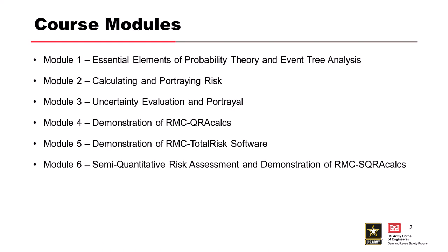This course is going to consist of six different modules, all of which will take place online. Module 1 will cover the essential elements of probability theory and event tree analysis. Module 2 will cover calculating and portraying risks. Module 3 will step into uncertainty evaluation and portrayal. Module 4 will be a demonstration of RMC QRA Calcs. Module 5 will be a demonstration of RMC Total Risk software. And Module 6 will cover semi-quantitative risk assessment and demonstrate how to use RMC SQRA Calcs.